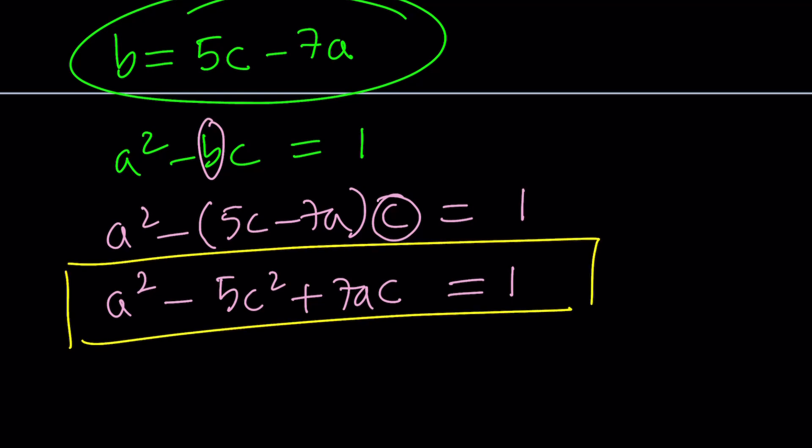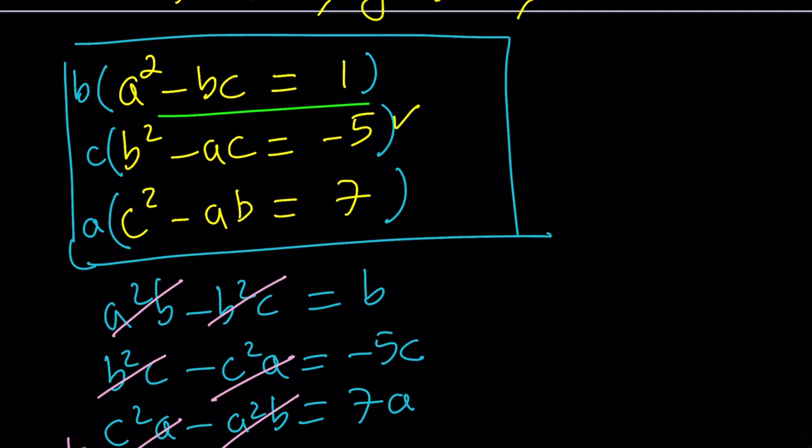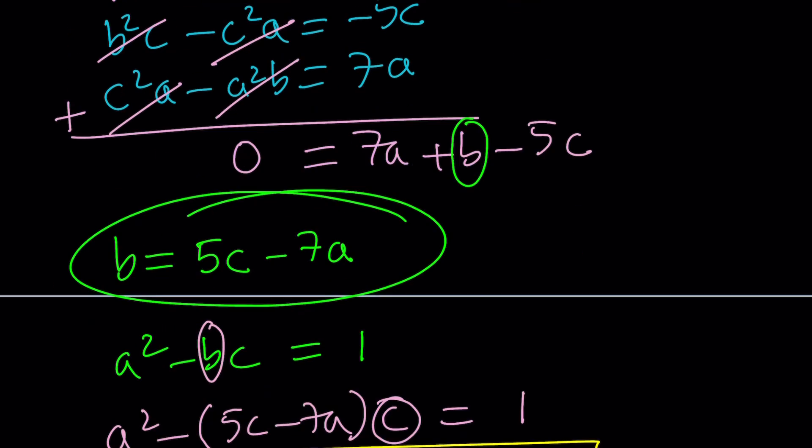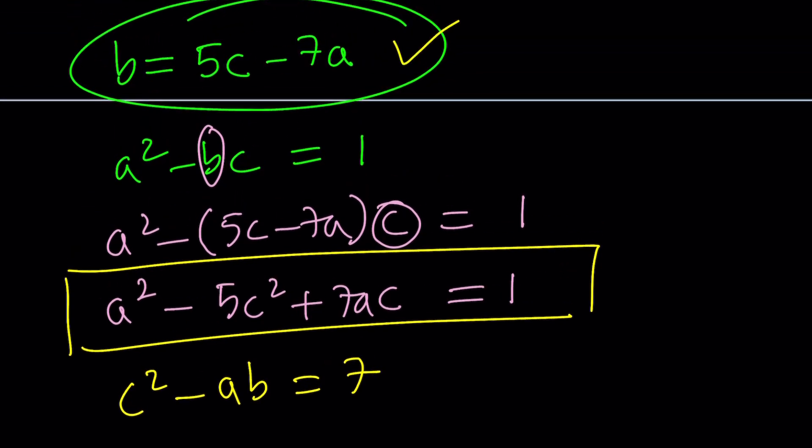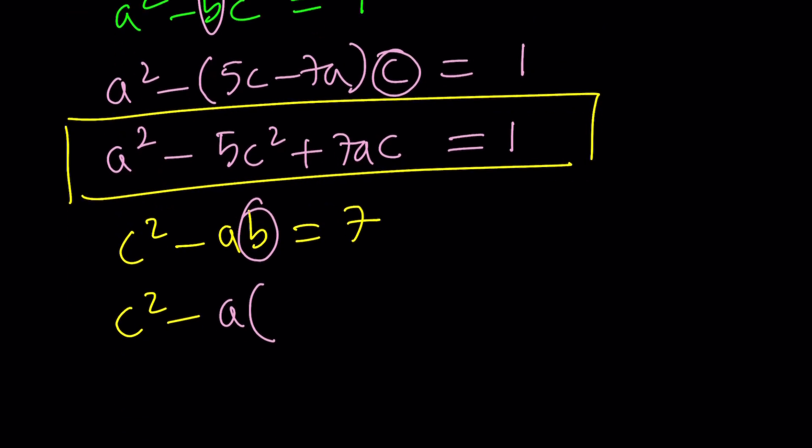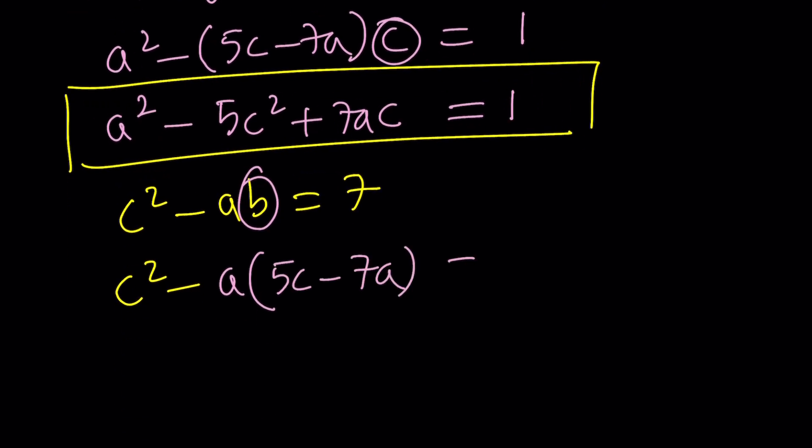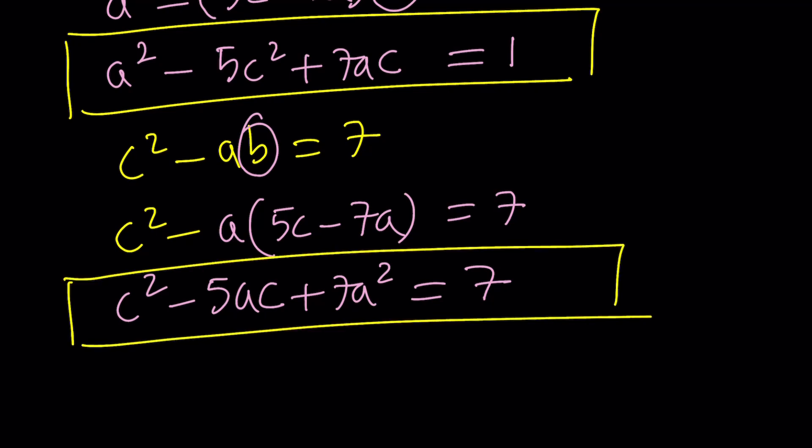We're going to get something like this and put it together. You could use the second equation here, but I want to go with this one. So let's go ahead and use that one. c squared minus ab equals 7. This equation, what am I going to do with this? Again, same thing. Replace b with 5c minus 7a. c squared minus a times 5c minus 7a equals 7. Let's go ahead and work this out. This gives us c squared minus 5ac plus 7a squared equals 7. This is my second equation. And what am I going to do with these two equations?